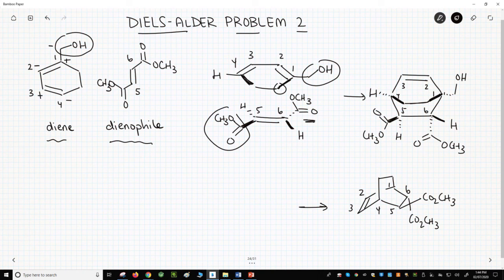All right, that's another Diels-Alder example. First, make sure the diene is S-cis, then determine regiochemistry, draw how the diene and dienophile align, and then draw the product.